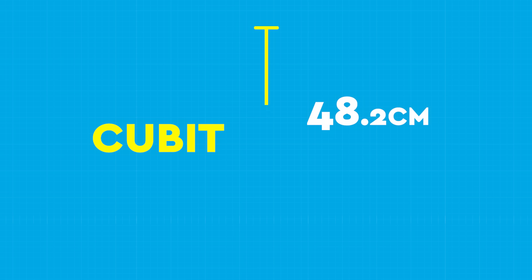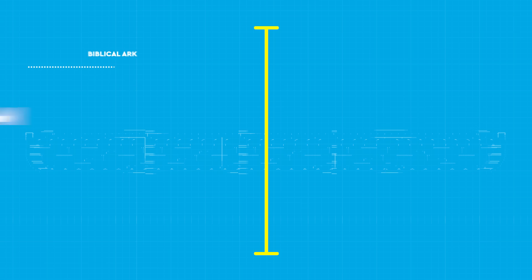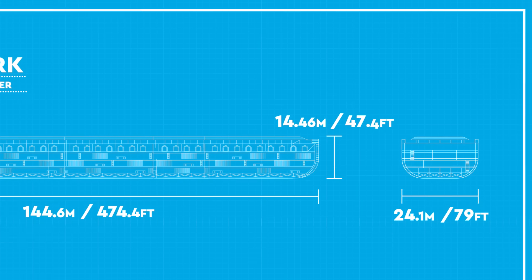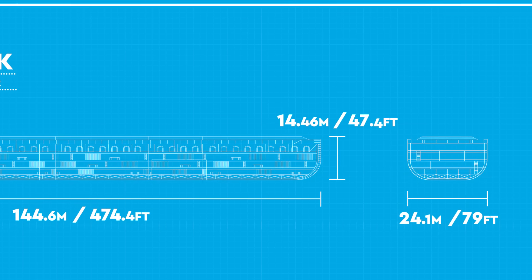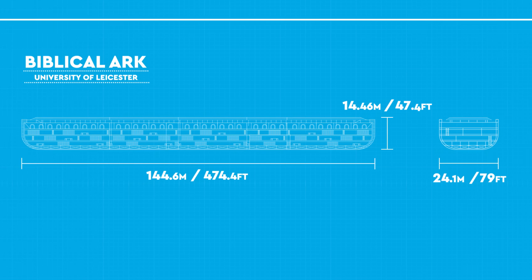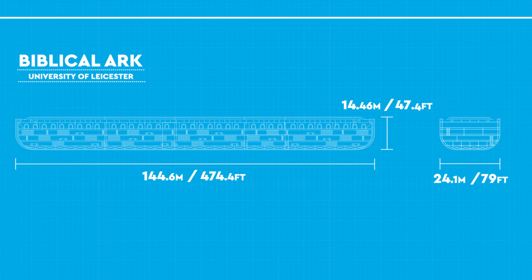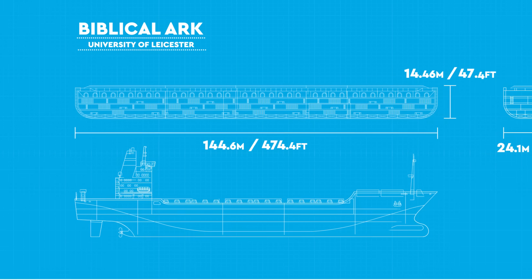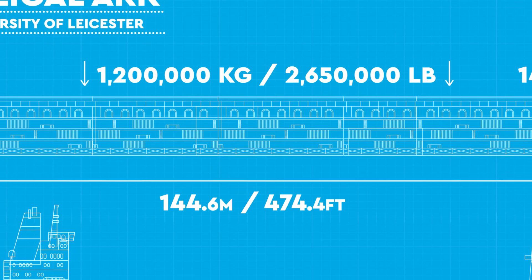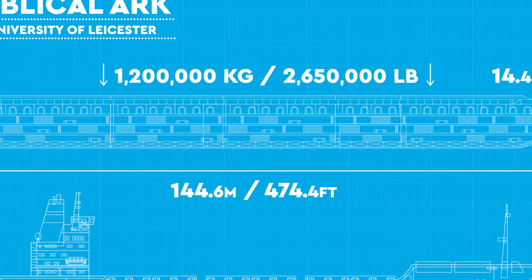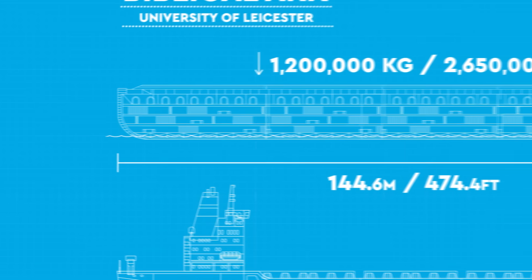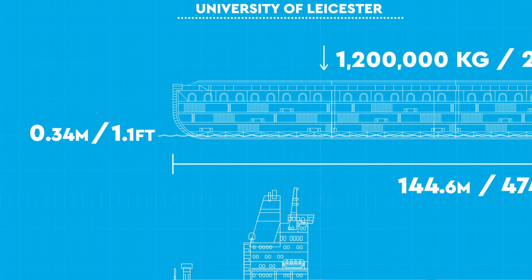Using a cubit of 48.2 centimeters, 1.58 feet, this resulted in an ark measuring 144.6 meters long, 24.1 meters wide and 14.46 meters tall, which is 474 feet long, 79 feet wide and 47.4 feet high. Pretty close to those other replicas. Now, a boat that big, roughly the size of a small cargo ship, built out of cypress wood, is coming in at 1.2 million kilograms or 2.65 million pounds of weight and would float pretty nicely in seawater. The study found it would only be dipping into water by 0.34 meters or 1.1 feet.